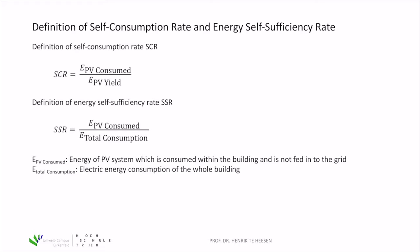The self-consumption rate (SCR) is defined as the ratio of PV yield consumed by the building over the total energy yield of the PV system. The energy self-sufficiency rate (SSR) is the ratio of self-consumed PV energy over the total energy demand or consumption of the building.